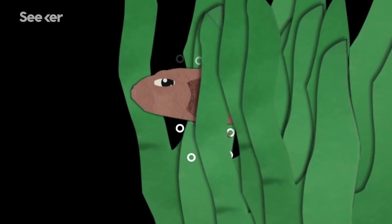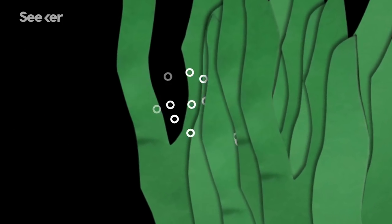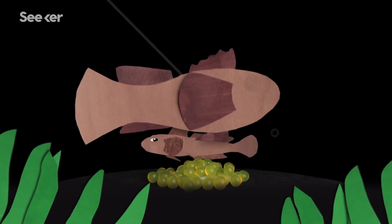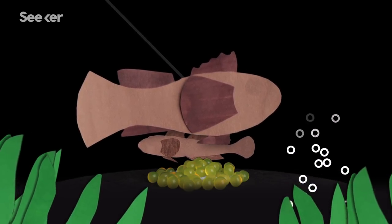Sneaker males, on the other hand, hide nearby and dart out at the exact moment that the territorial males are fertilizing, and they deposit some sperm of their own.